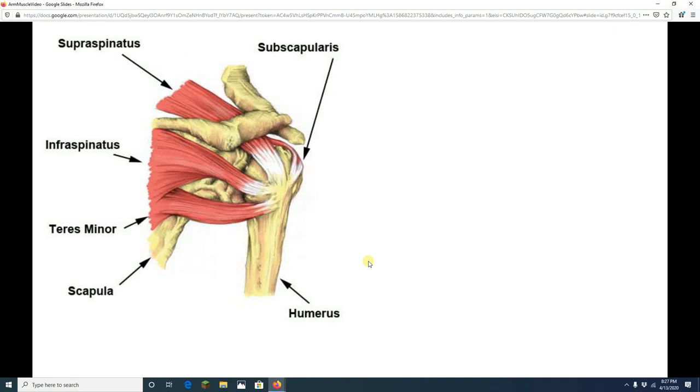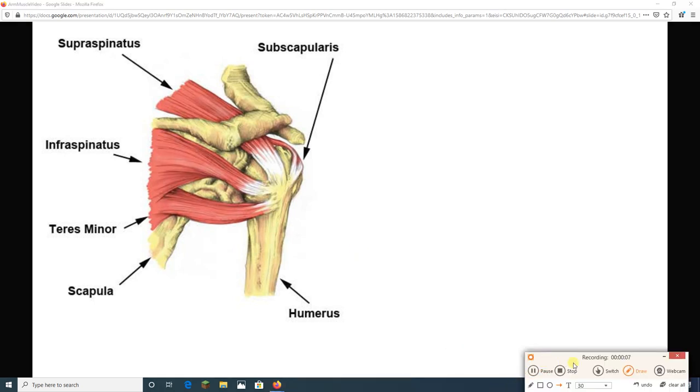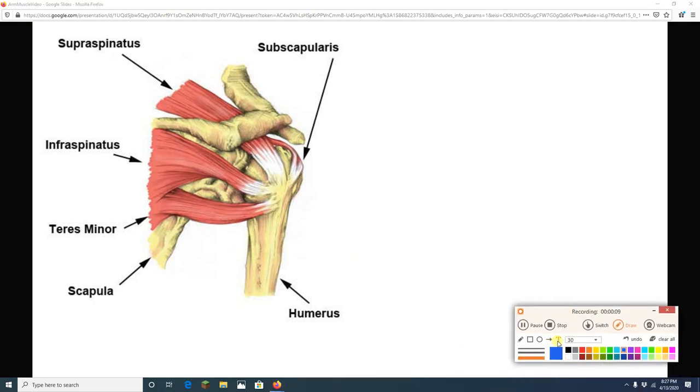Folks, we are now going to do a quick little video on the muscles of the rotator cuff. The rotator cuff is this nickname that's given to four muscles that are going to stabilize the shoulder joint. Remember, ball and socket joints, because they're so mobile, are at risk for dislocation. So it's nice to have muscles that can stabilize them.